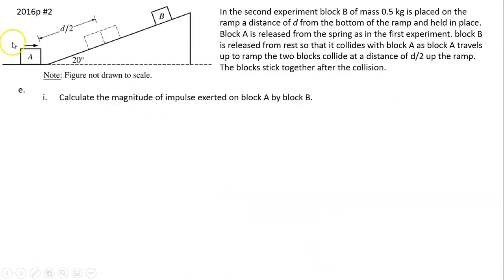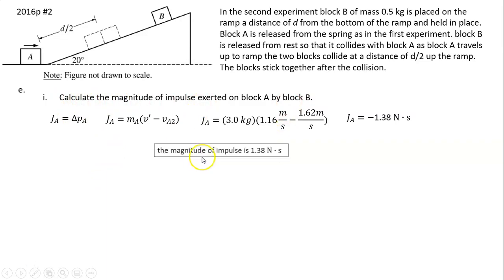Part E: Calculate the magnitude of impulse exerted on block A by block B. The impulse equals the change in momentum. The impulse on A is the change in momentum of A. Change in momentum is mass of A times change of velocity of A. We know velocity after collision is 1.16 and velocity before the collision is 1.62. So we have impulse = -1.38 N·s. By the way, newton times second is equivalent to kilograms times meter per second. However, they're asking for the magnitude. The magnitude shouldn't have a negative sign. The magnitude is just 1.38 N·s.